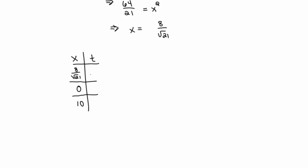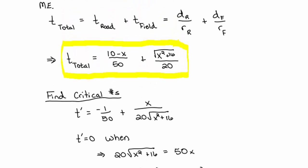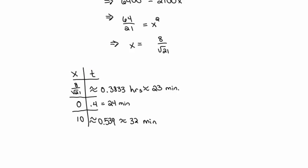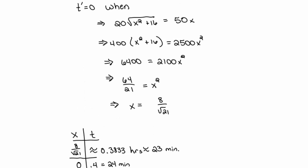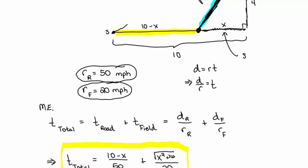I'm going to plug in 0, 10, and that 8 over root 21. Give me a moment. Okay, I grabbed my calculator and went through the computations. There's not that much of a difference in this case. It's still fastest if they enter the field when x equals 8 over root 21. 8 over root 21 is about 1.7 miles in.